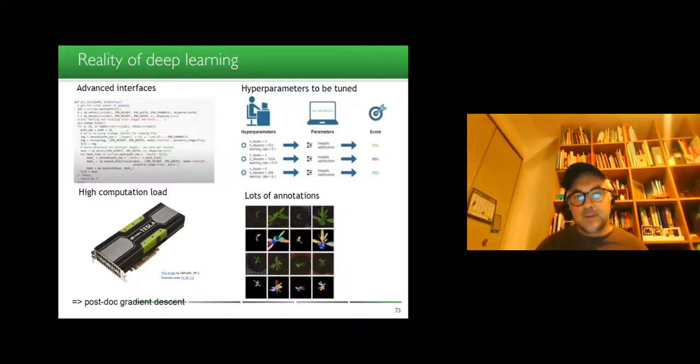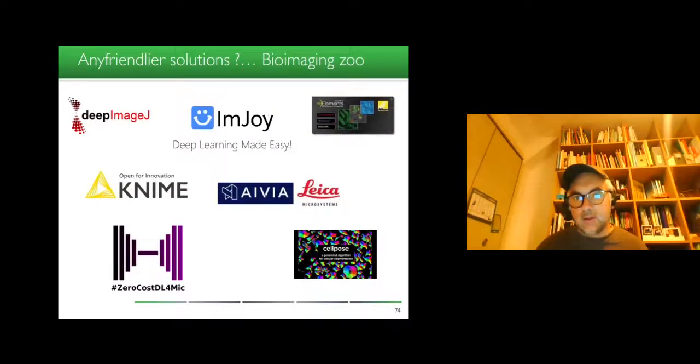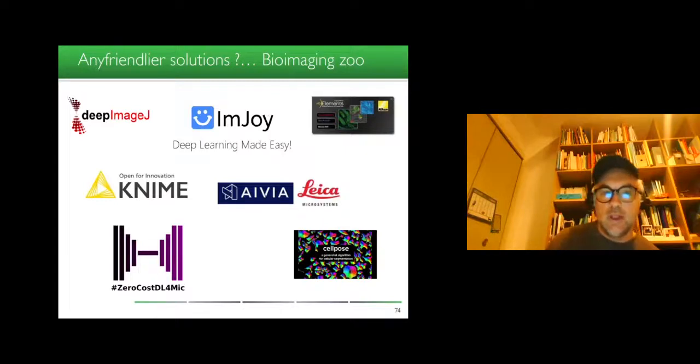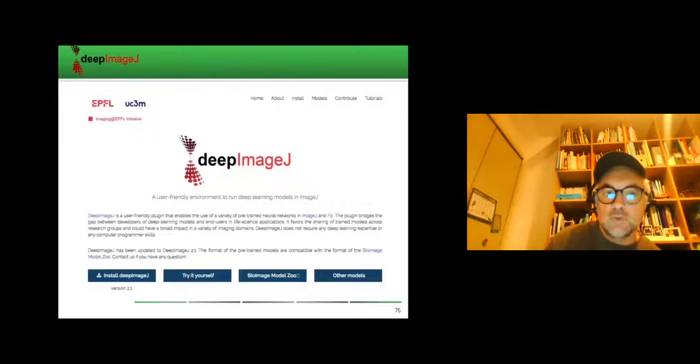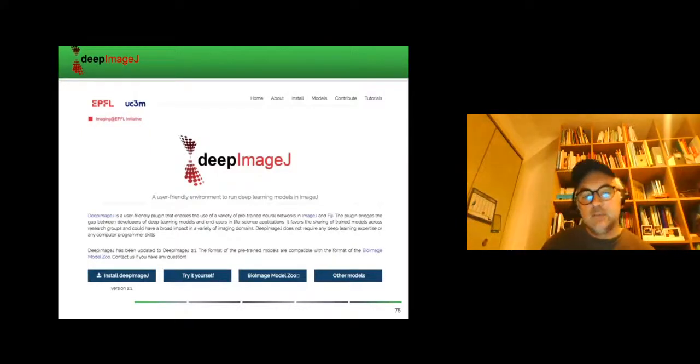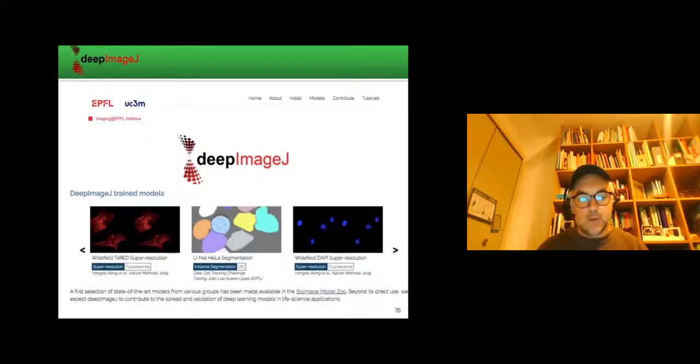Daniel Sage will also give some elements about this in his zero-code deep learning solution. Some solutions include DeepImageJ, which is ready there to do what is called inference. If you have an already trained model, you can make it accessible via ImageJ, but it doesn't yet include the retraining of the model. You have a zoo of models which are available there in order to be reused. If your images look this way, you can use them. I guess you will have a demo about this later in the training.